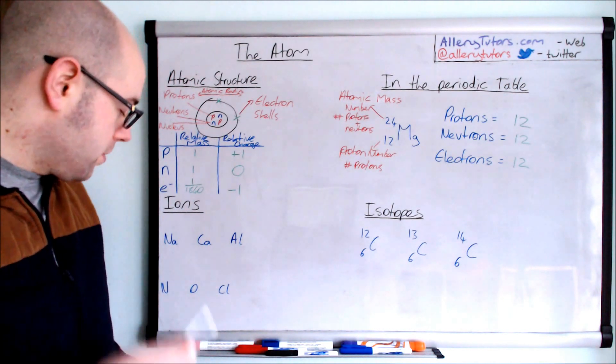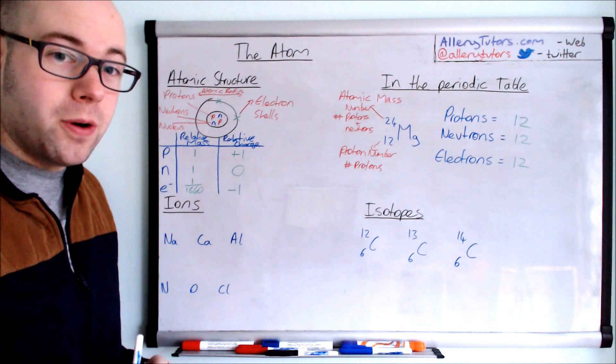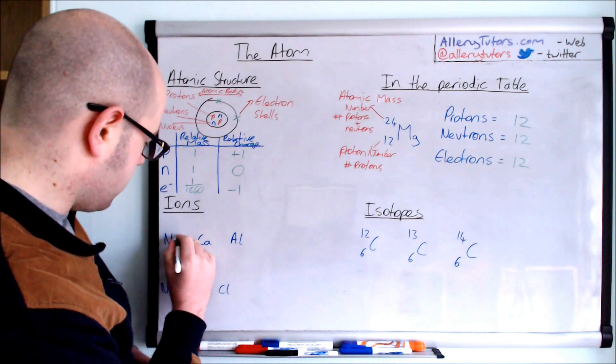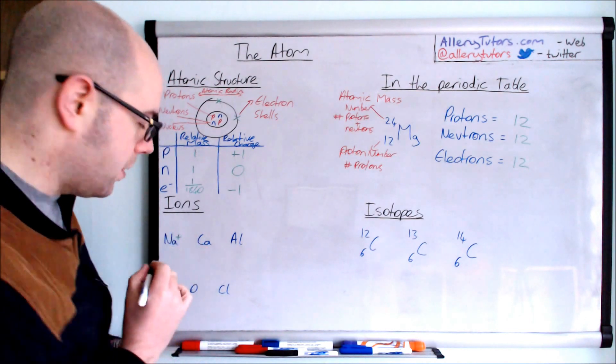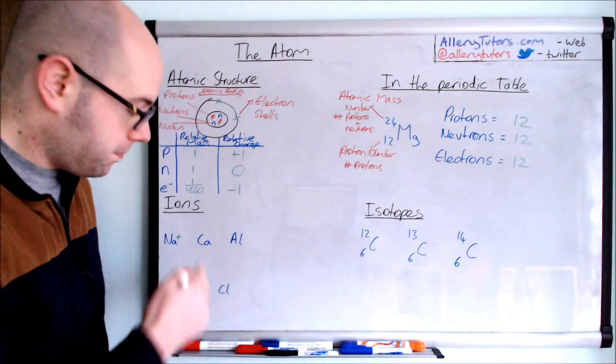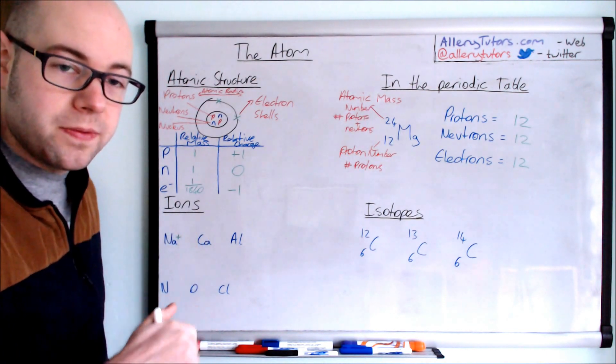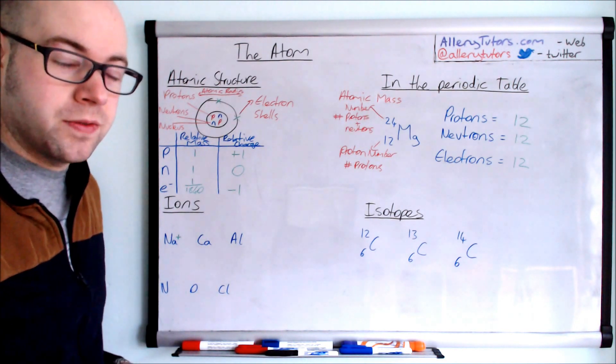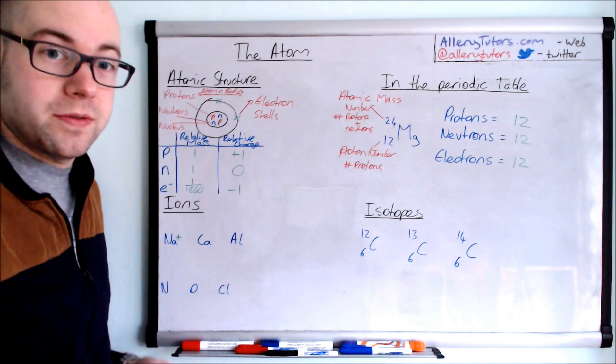So we're going to look at sodium. Sodium is in group one. They form one plus ions. Calcium is in group two. It loses two electrons to form a full stable outer shell. It is very rare for calcium just to lose one electron to form a one plus because it's obviously not stable. So the group two elements form two pluses.